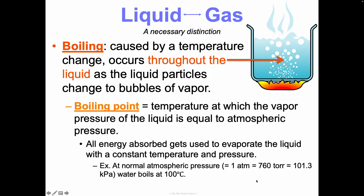At normal atmospheric pressure — 1 atm, equal to 760 torr or 101.3 kPa — water boils at 100°C. The boiling point is dependent on pressure: the lower the atmospheric pressure, the lower the boiling point. A pressure cooker works by sealing steam in a small contained space, increasing the pressure, which raises the boiling point and results in shorter cook times.